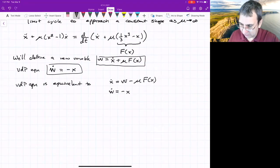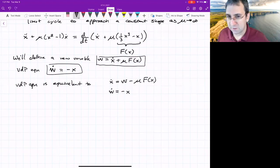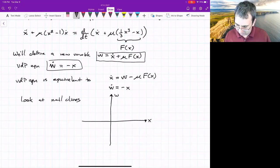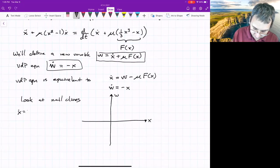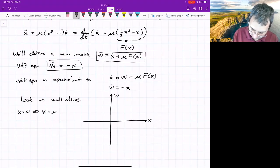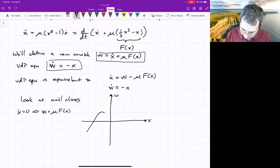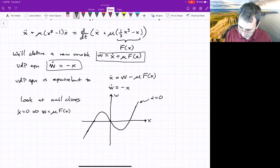And what can we do here? Well, let's look at nullclines of this system, the variables x and w. Let's look at the x dot equals zero nullclines. So x dot equals zero gives us w is mu fx. And what is f of x? It's this cubic thing. So it'll look like something like this. That's x dot equals zero.